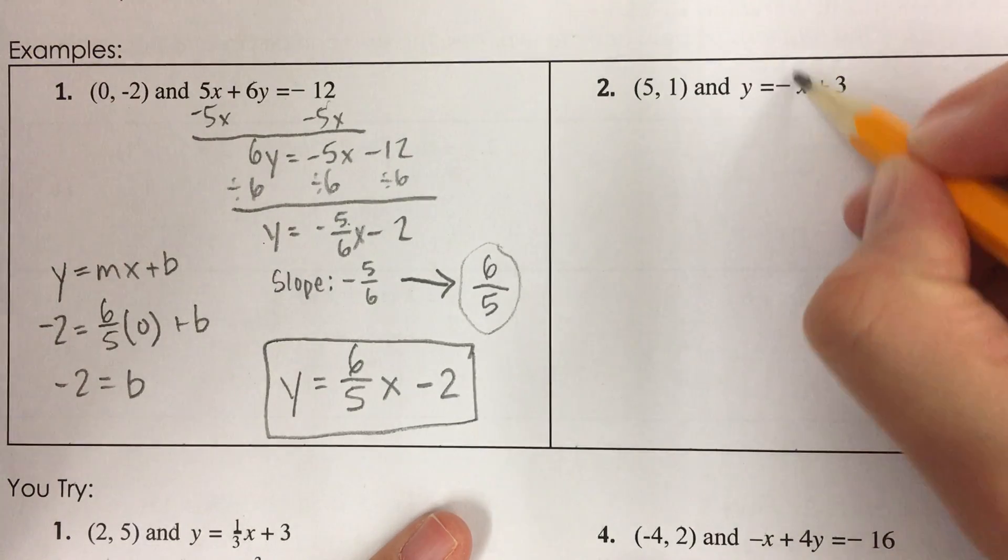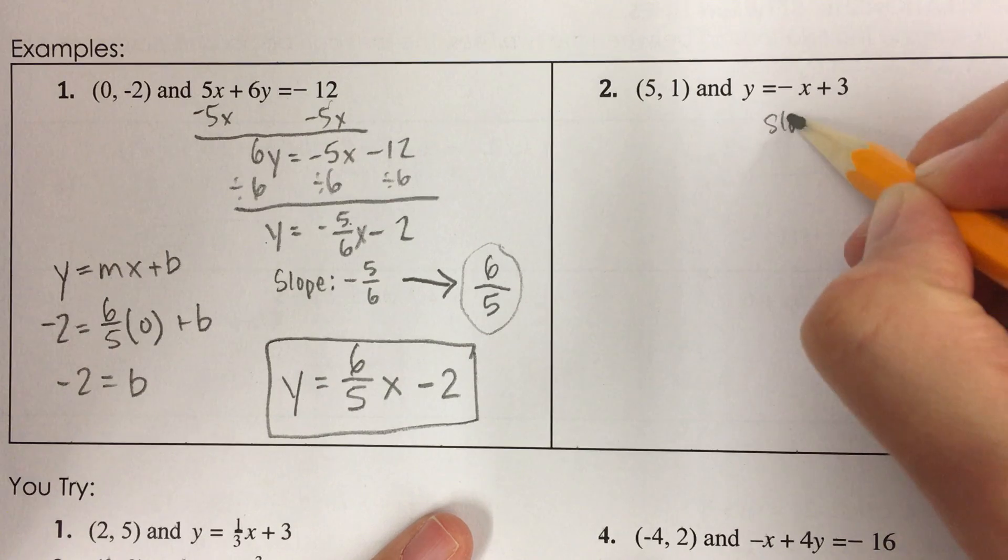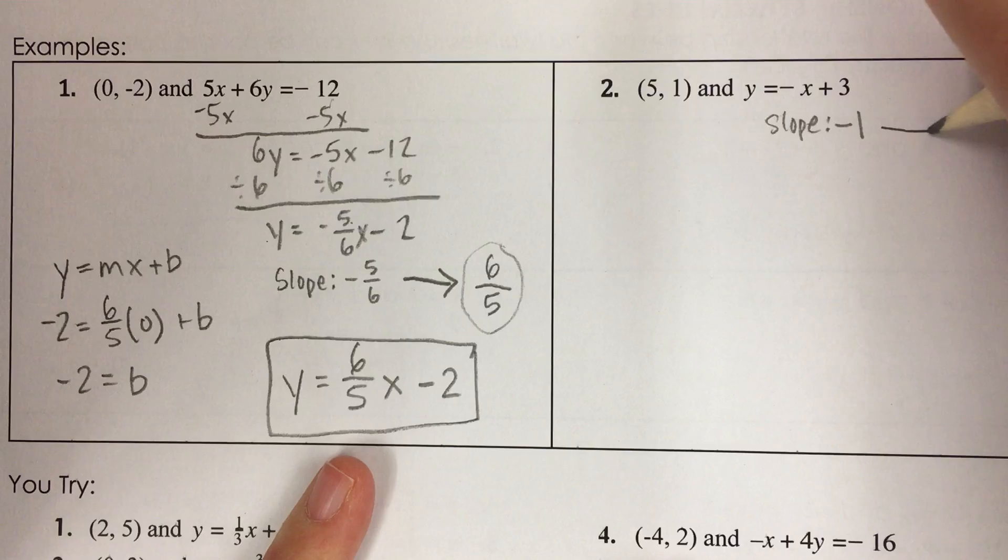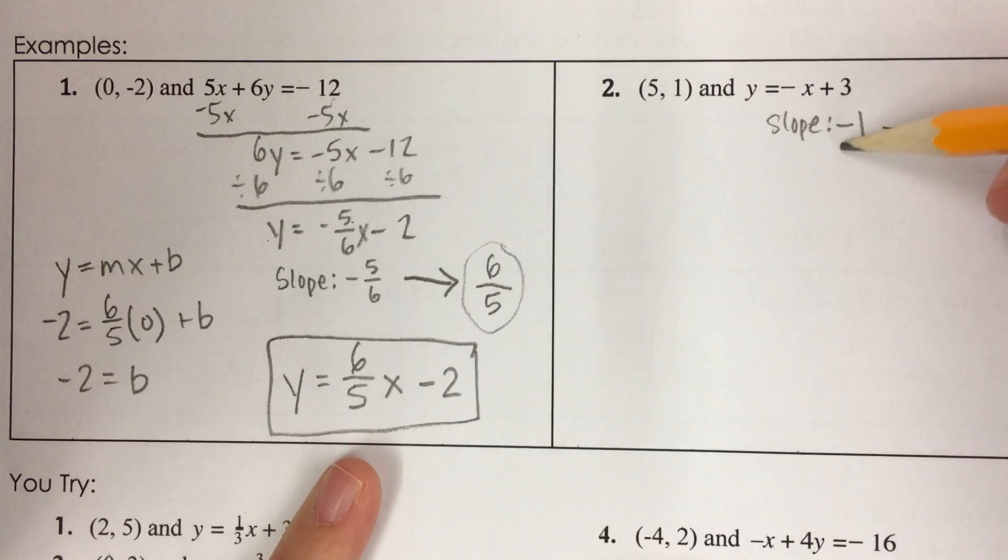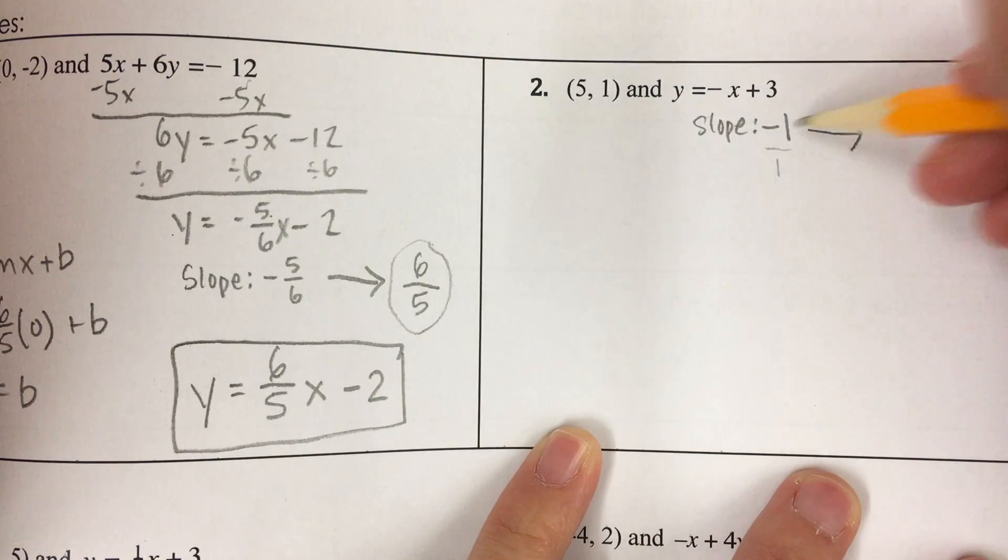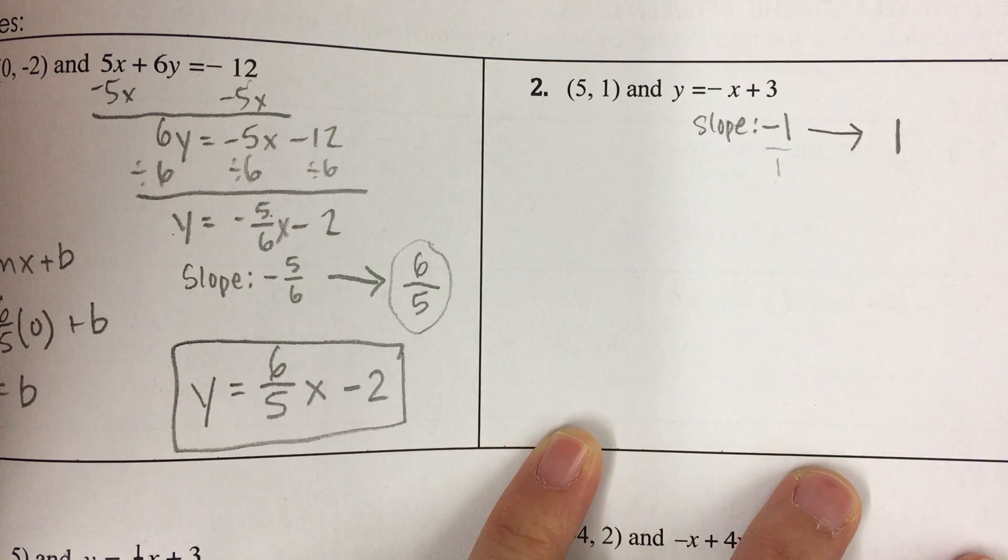Let's try this one. Okay, the slope right here is negative 1. So I need the opposite or negative reciprocal. Okay, so this is negative 1 over 1. When I flip it, it doesn't make a difference. The reciprocal of 1 is 1. Okay, but I do need to change the sign. So my new slope is positive 1.